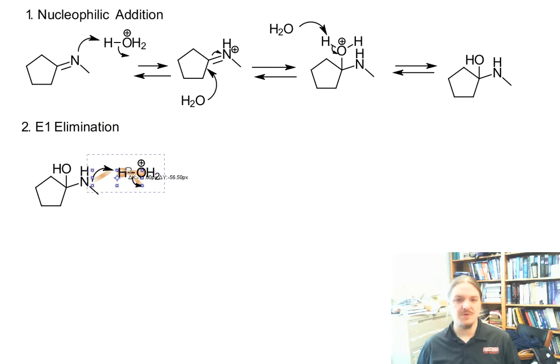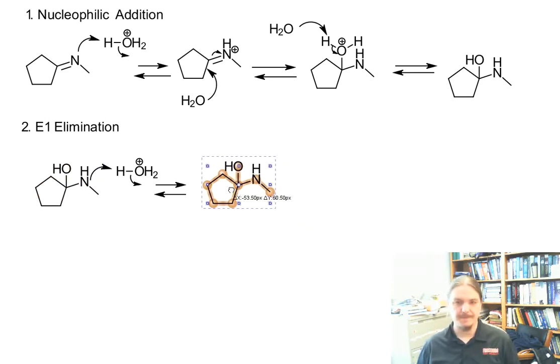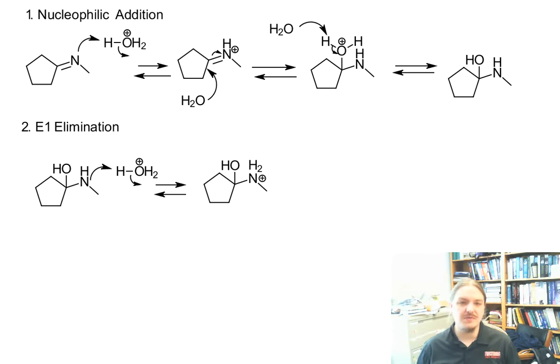We get proton transfer. Again, this is now happening to the nitrogen, because it's ultimately the amino part of this molecule that's going to be a good leaving group. So now it's protonated. It has two hydrogens, one of them extra.